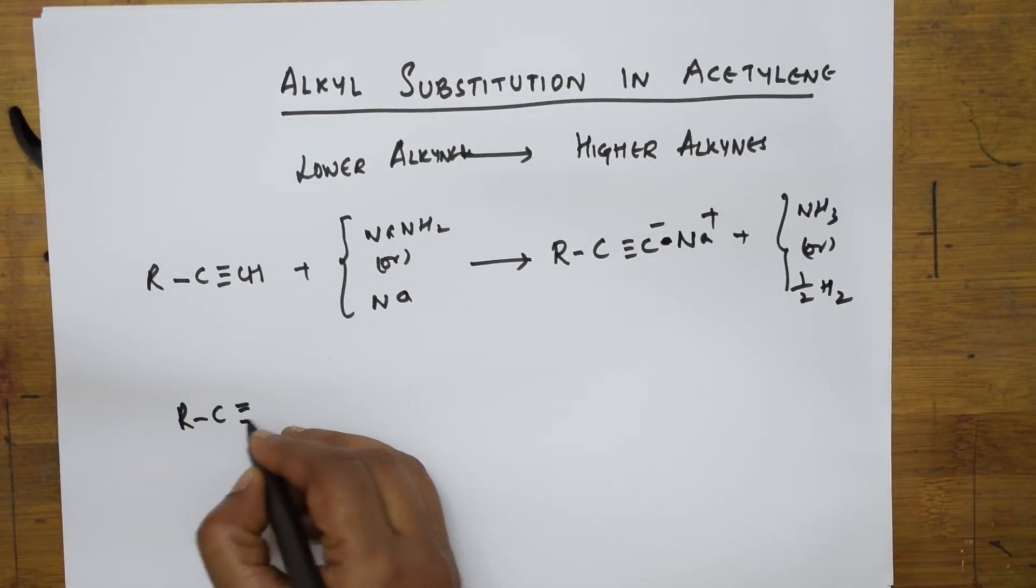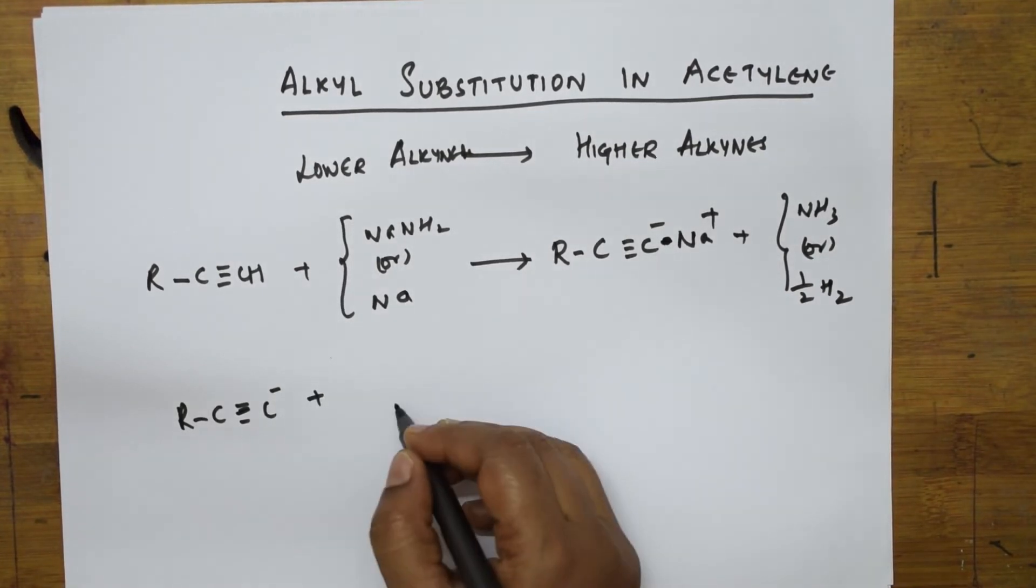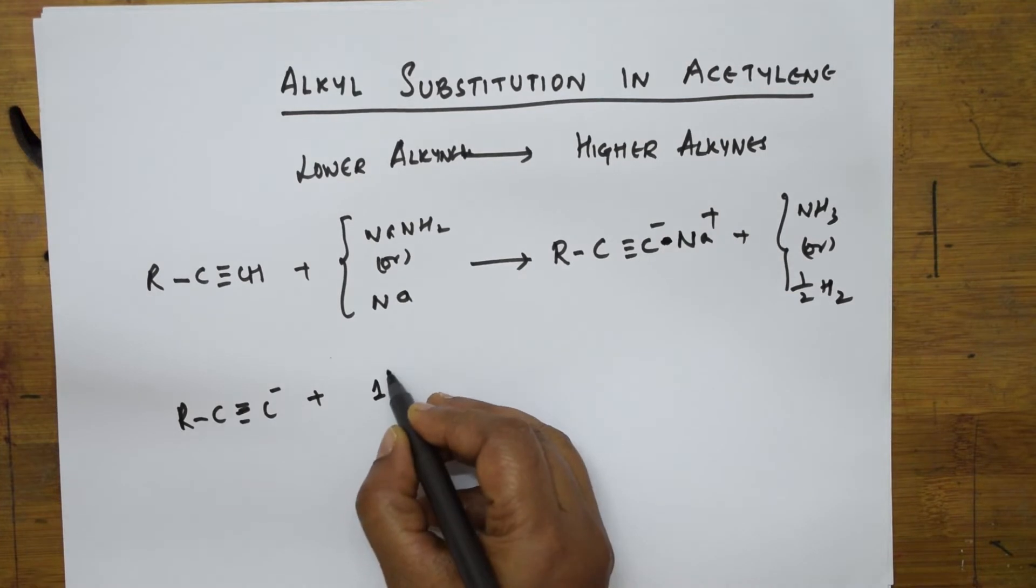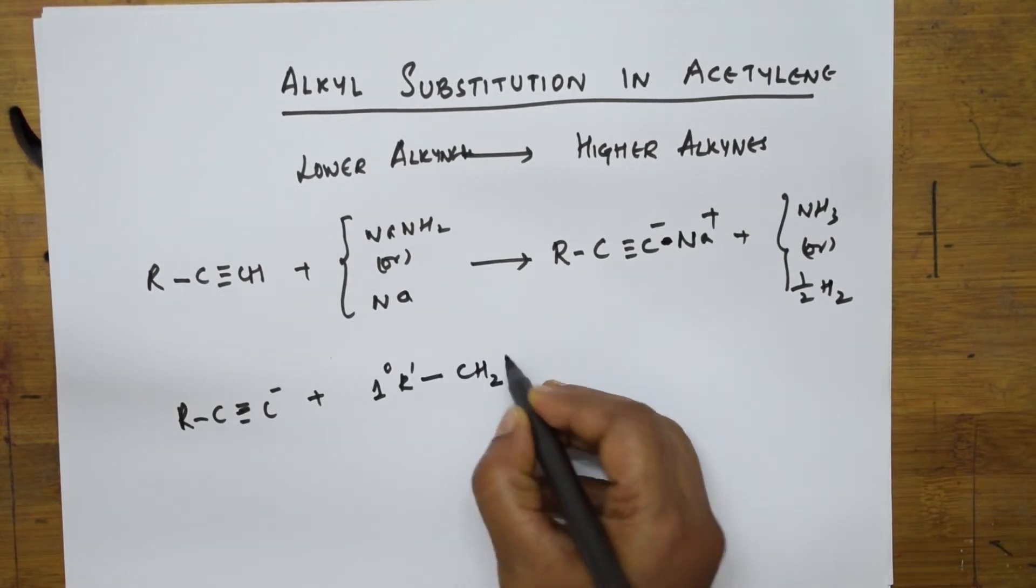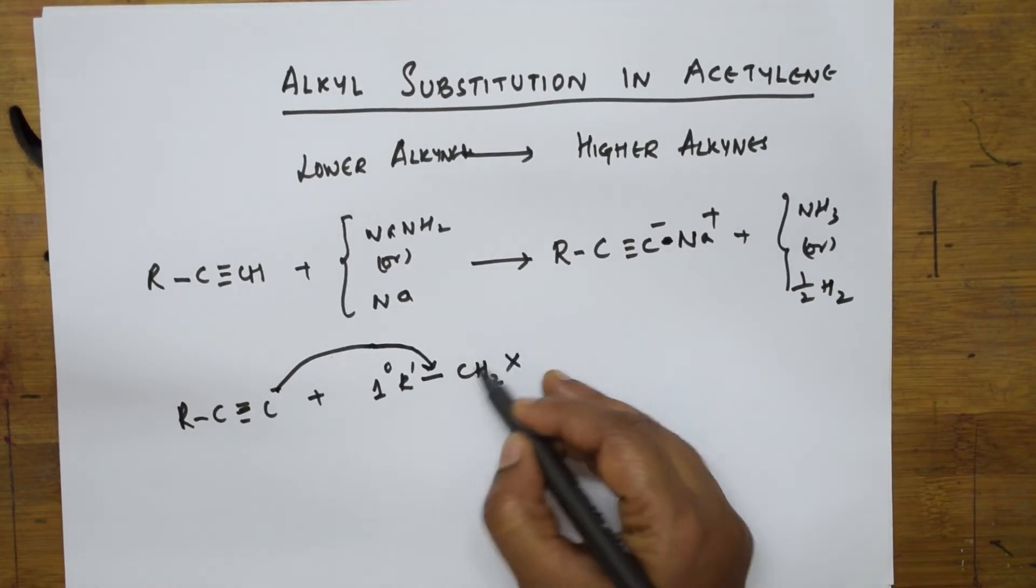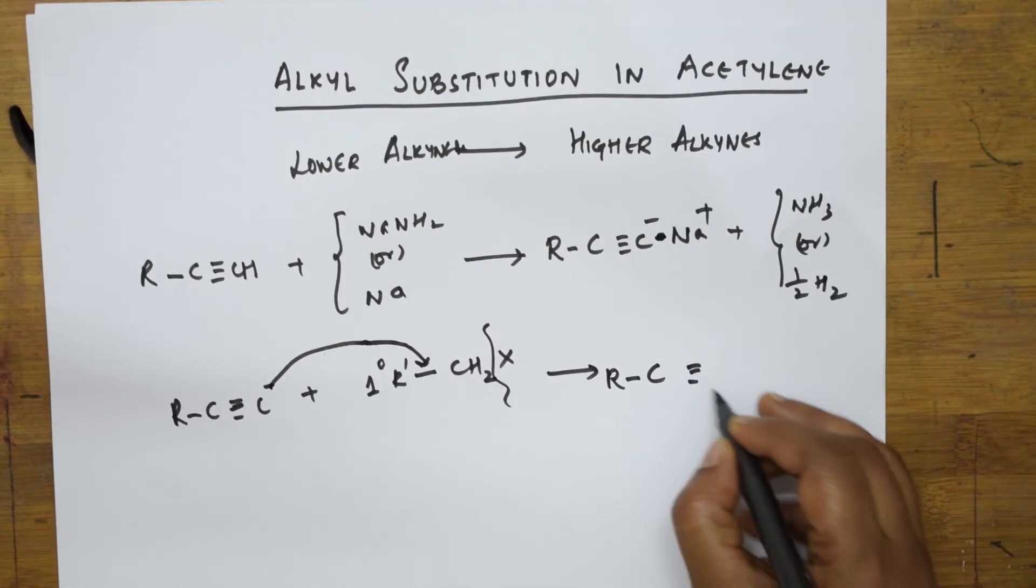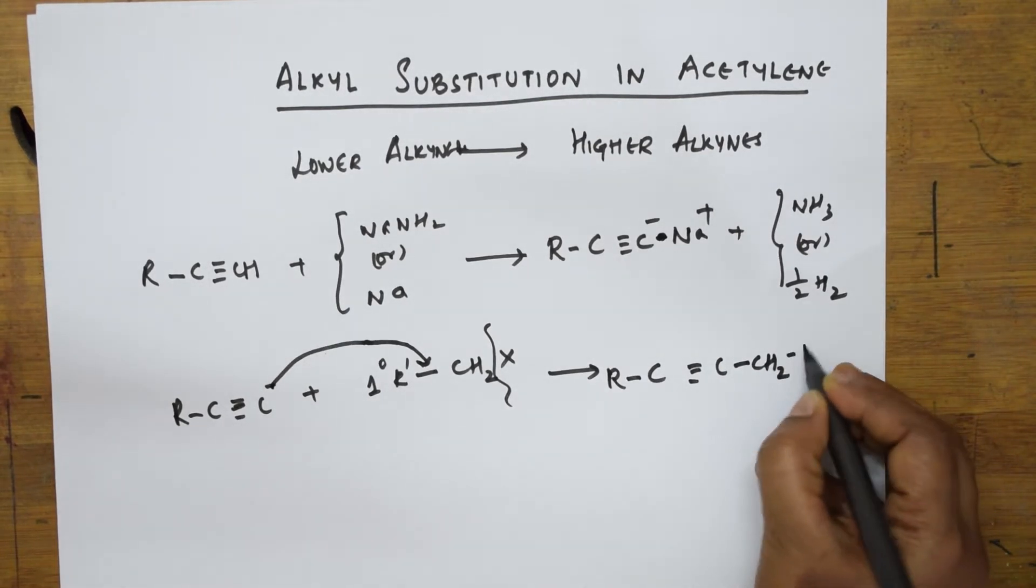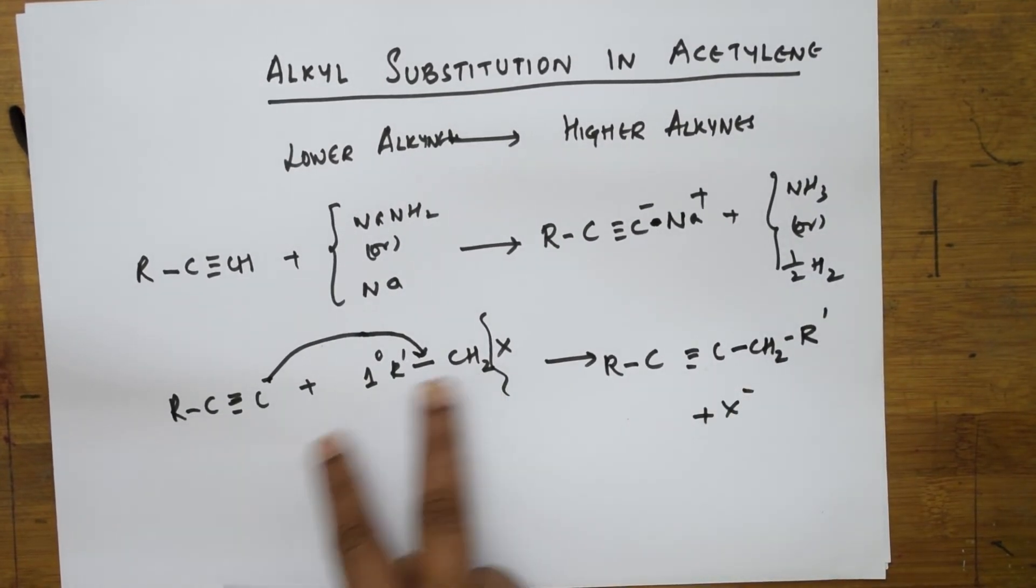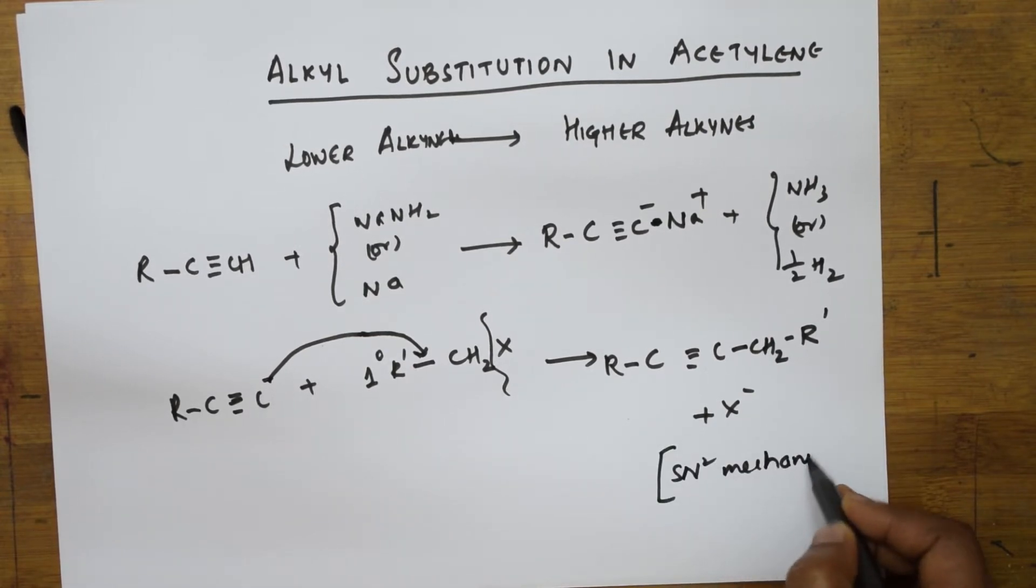I'm going to show you the mechanism so we can take examples. To this we're going to add a primary alkyl halide. So alkyl group primary, this is CH2X. C minus attacks this bond. When this attacks there's cleavage of the bond here, so this becomes R-C≡C-CH2-R and X minus is out. This is an SN2 mechanism - both reactive molecules are participating.